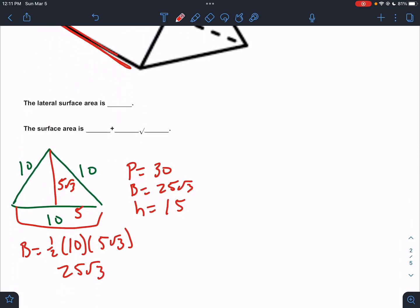So we'll start since we're doing both. I usually start with lateral when I'm doing both. The lateral would be pH, which would be 30, the perimeter of the base, times the height, 15. That would be 450 for the lateral portion of this problem.